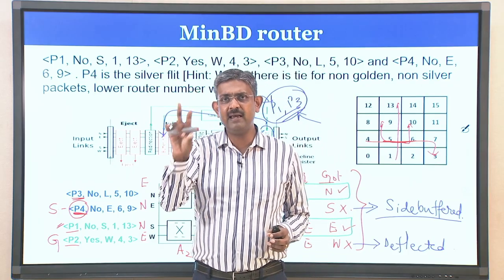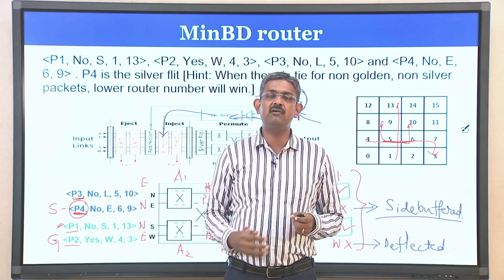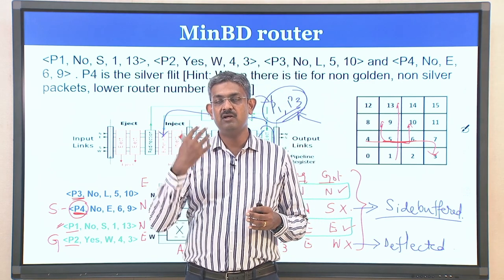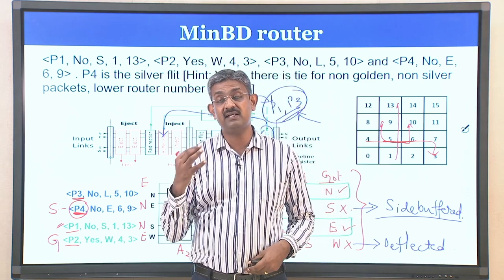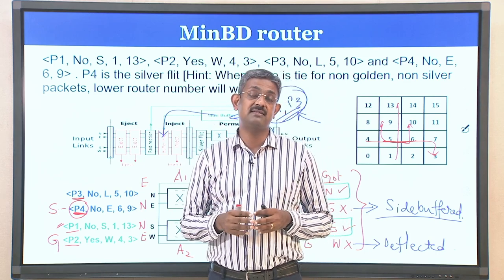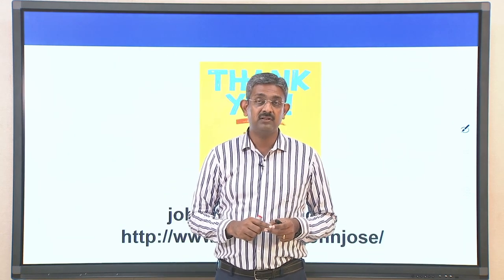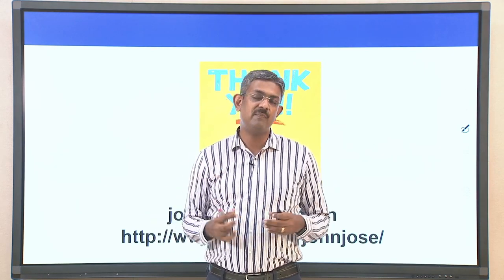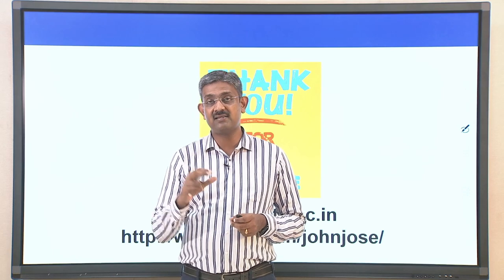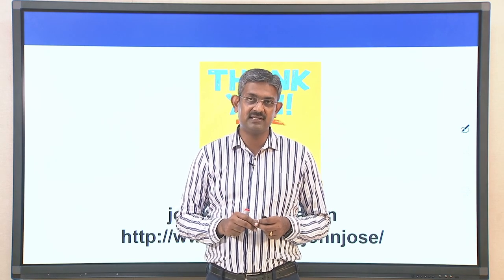By comparing the same set of packets through chipper and minbd routers, we can see how the priority mechanisms — golden packet, silver flit, and tie-breaking at both the PDN and buffer eject unit — determine which packets are productively routed, which are deflected, and which get side-buffered. Practice with various combinations of packets and priority schemes to get a solid grip on bufferless and minimally-buffered deflection routers. With this we conclude today's session. Thank you.